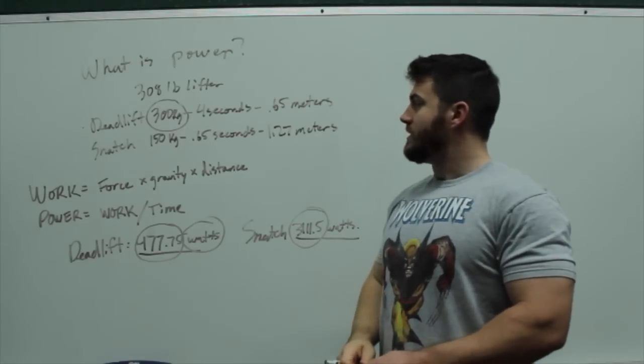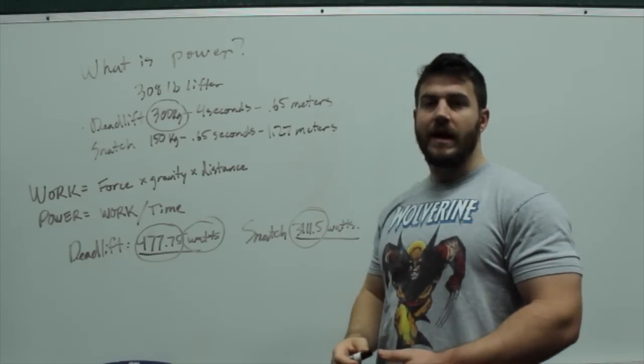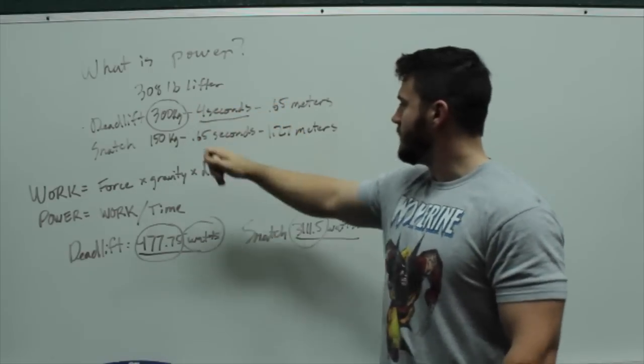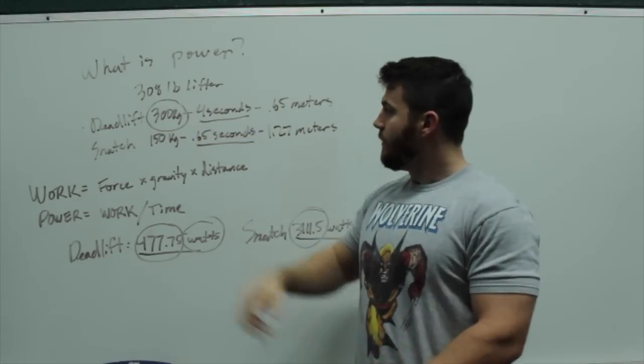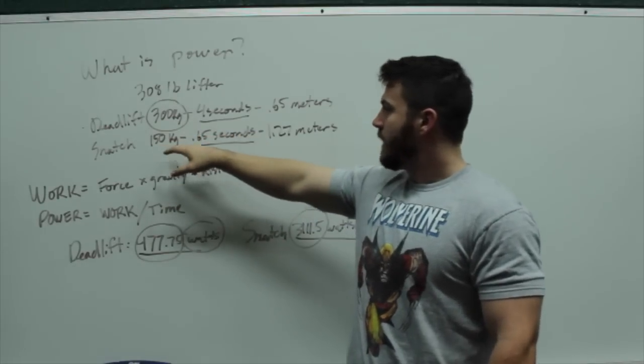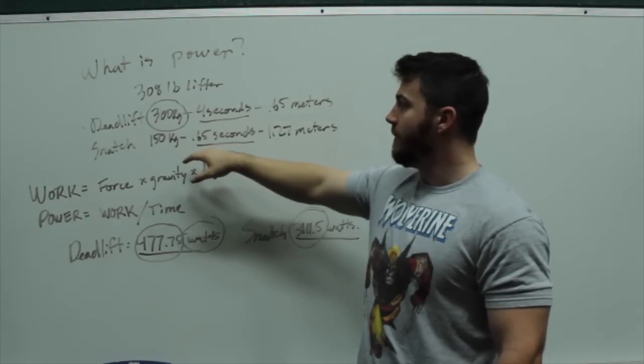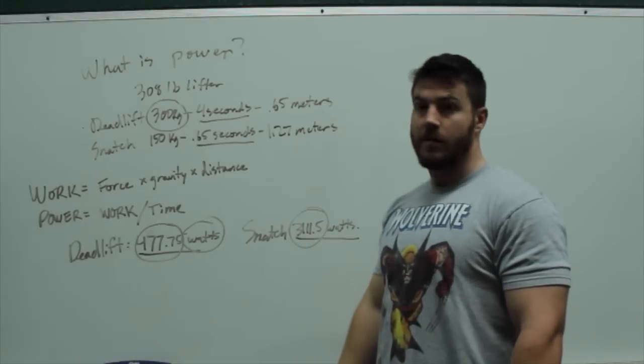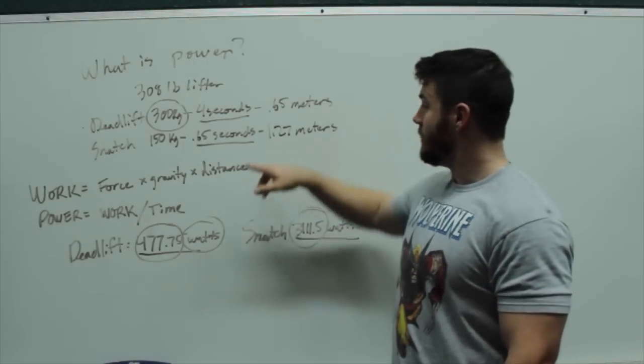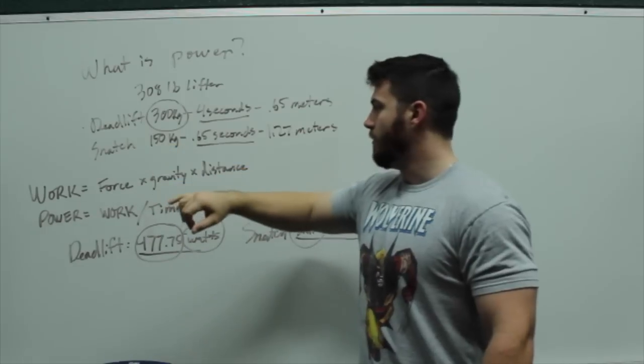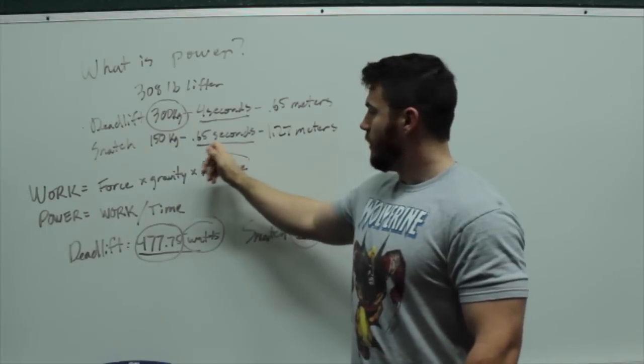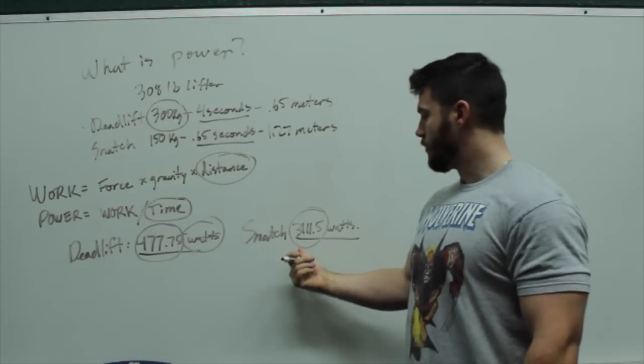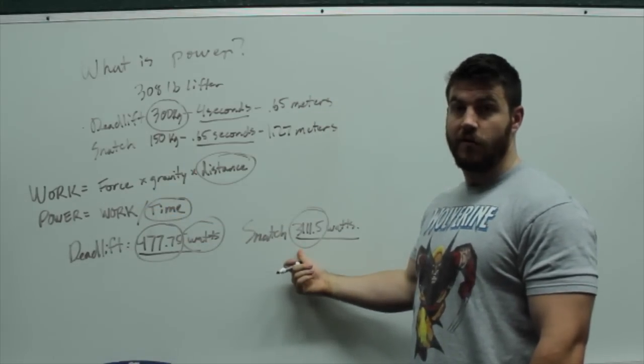The reason why this is true is that power is always going to be higher with sub-maximal weights because the amount of time necessary to complete the lift is going to be far less. Even though the weight is half, the time is much less than half. It's not 152 seconds, it's 0.65. That's going to make a huge difference. Additionally, the distance is greater in this power movement even though the time is less, and the distance here with the lower time creates a big difference in your final power output.